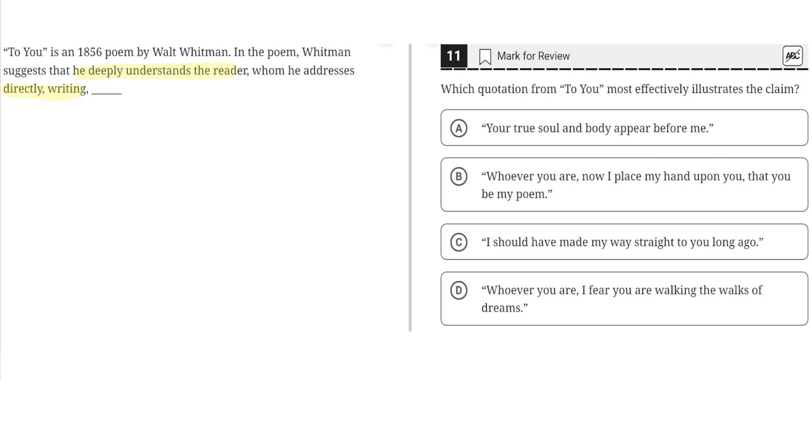So choice A says, your true soul and body appear before me. This seems to be correct because it shows that he directly addresses the reader by saying your, and it also shows that he deeply understands the reader by saying that he sees his true soul and body appear before him. So A seems to be the correct answer.